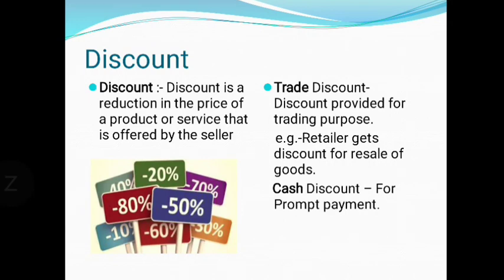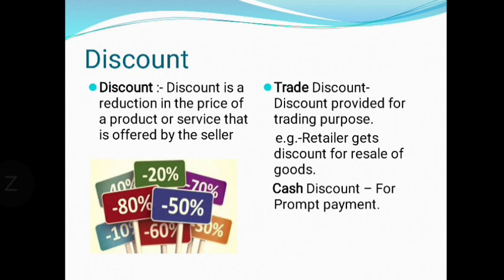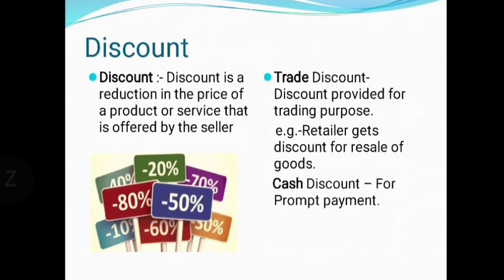Next is discount. Discount is a reduction in the price of a product. In accounting, discount is used in two types. First is trade discount — the discount provided for business or trading purposes. For example, a pen costing rupees 5 is purchased by a retailer at rupees 4; that rupee 1 difference is called trade discount. Second is cash discount — given by a trader or wholesaler for prompt payment, immediate payment, or payment within a specific duration.